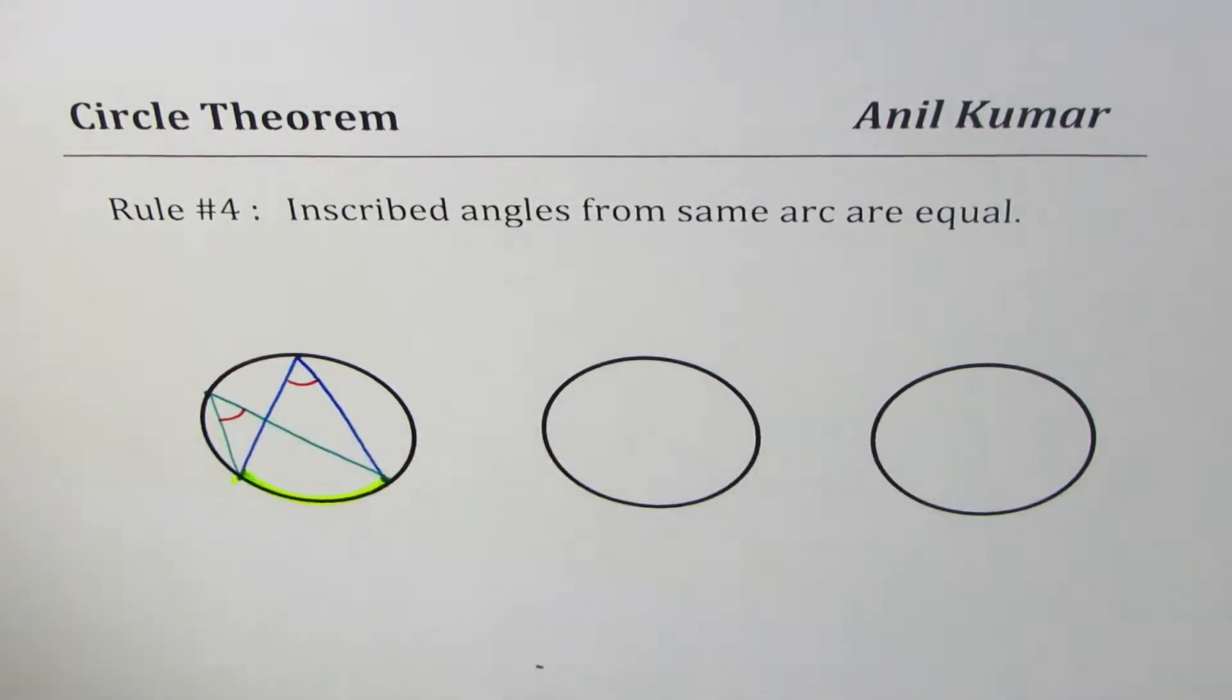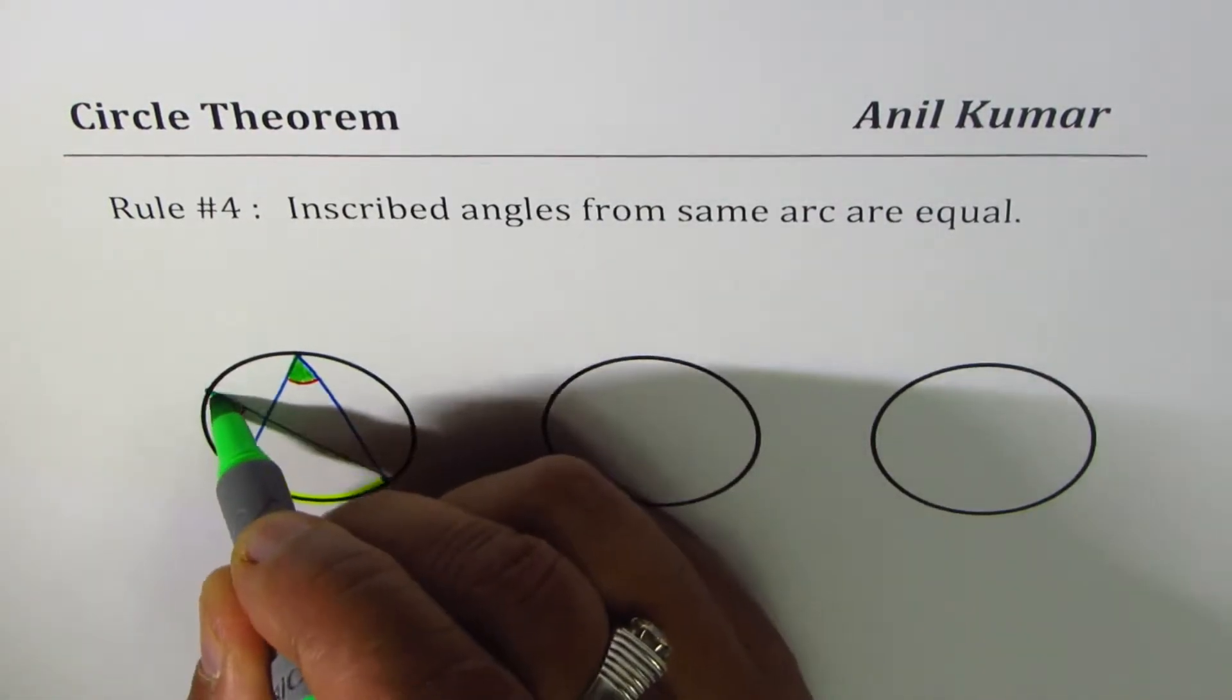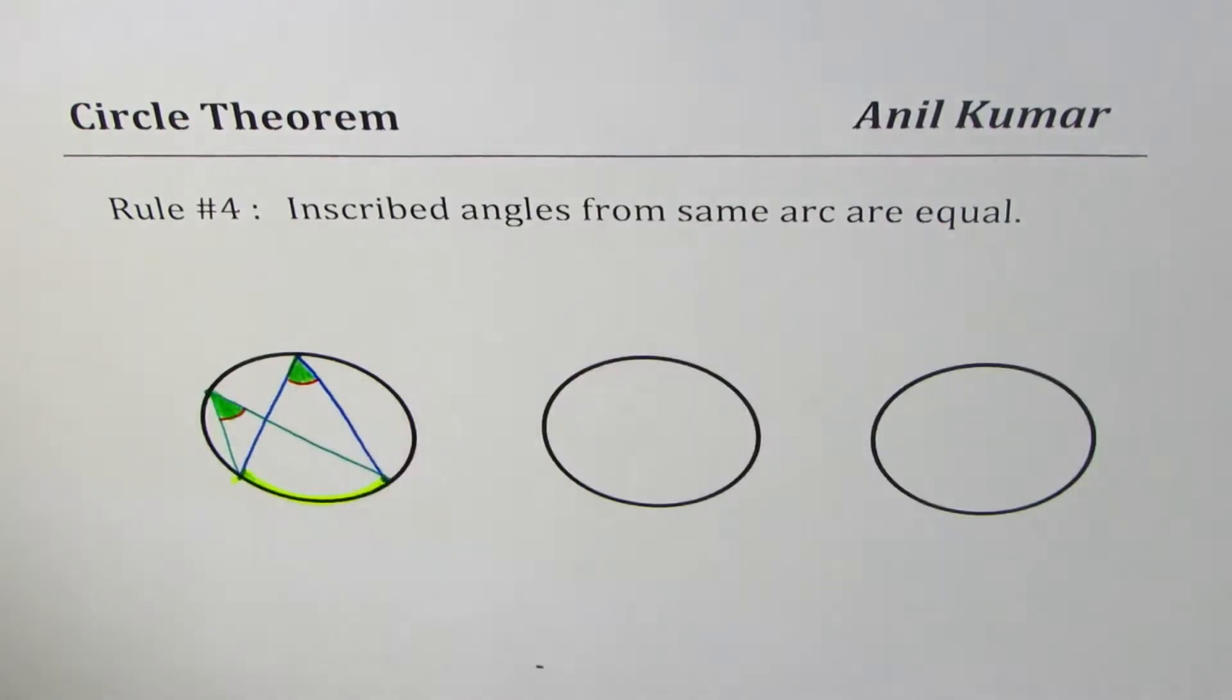angles are equal. So that is what the theorem is. I hope that is absolutely clear. So let's have a few examples based on this.